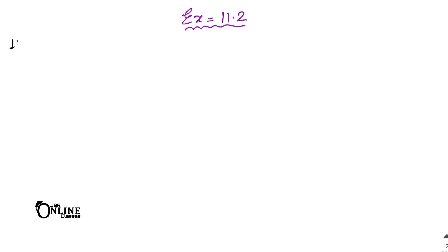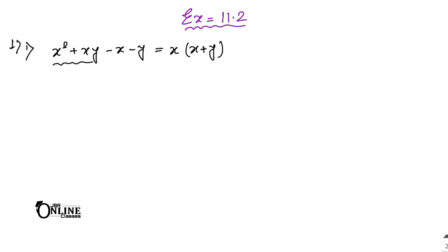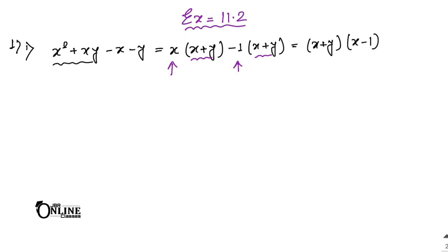Sum number 1.1: x² + xy - x - y. You have to find the common factors. From x² + xy, the common factor is x, giving x(x + y). For the next two terms, minus x minus y, common out minus 1, giving minus 1(x + y). So x + y is the common factor. Write down (x + y)(x - 1). Always be very careful about the sign.